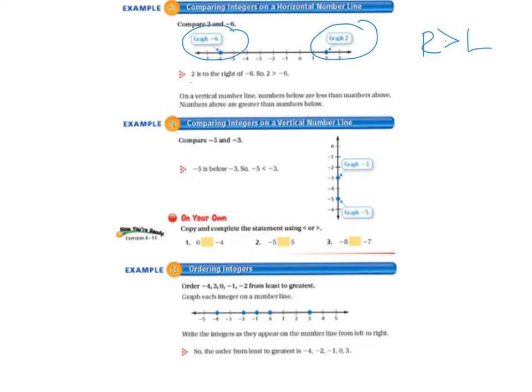On a vertical number line, numbers below are less than numbers above. Example 2: comparing integers on a vertical number line. Compare negative 5 and negative 3. Negative 5 is below negative 3, so negative 5 is less than negative 3.